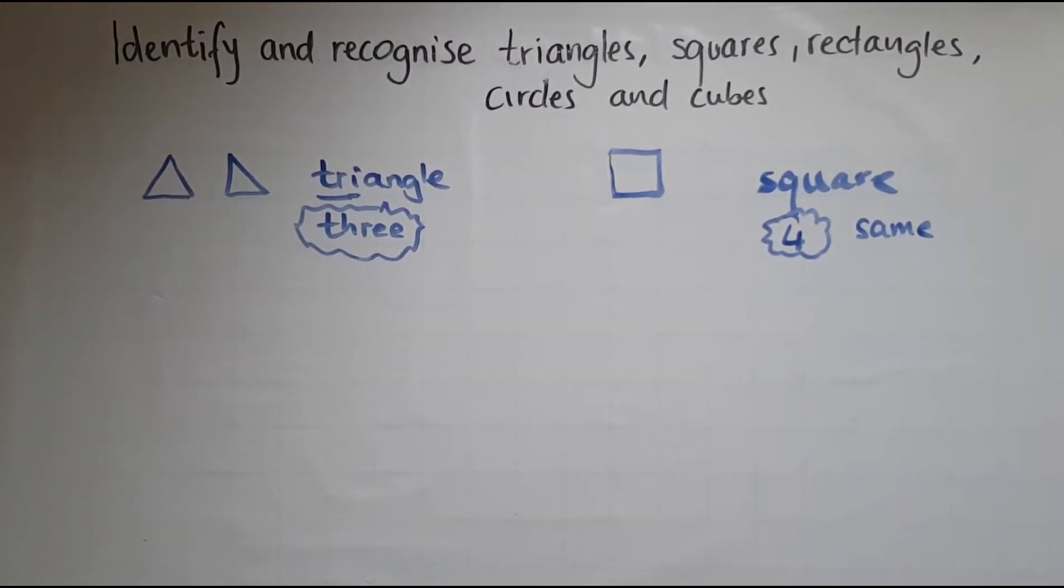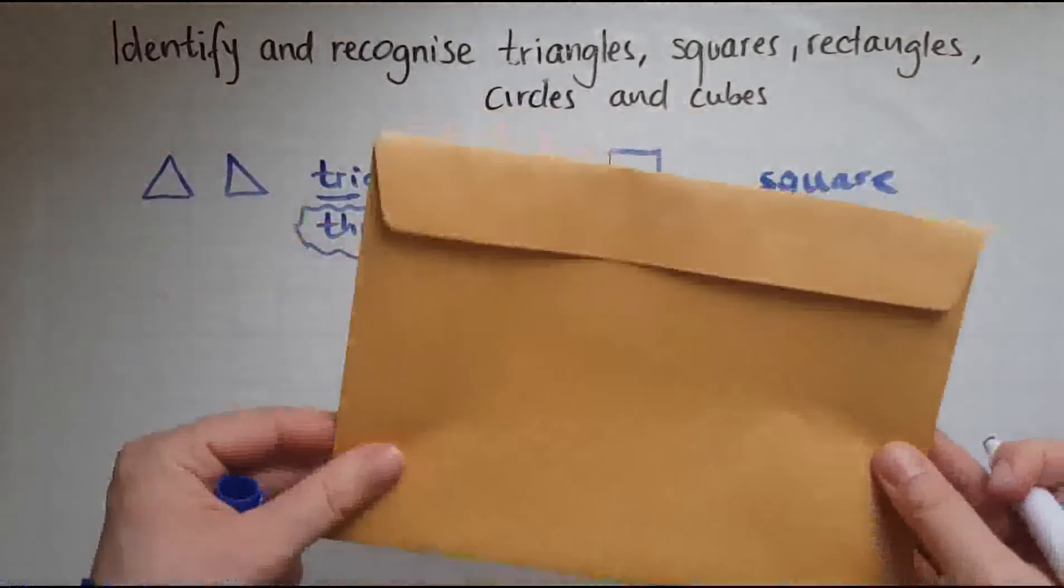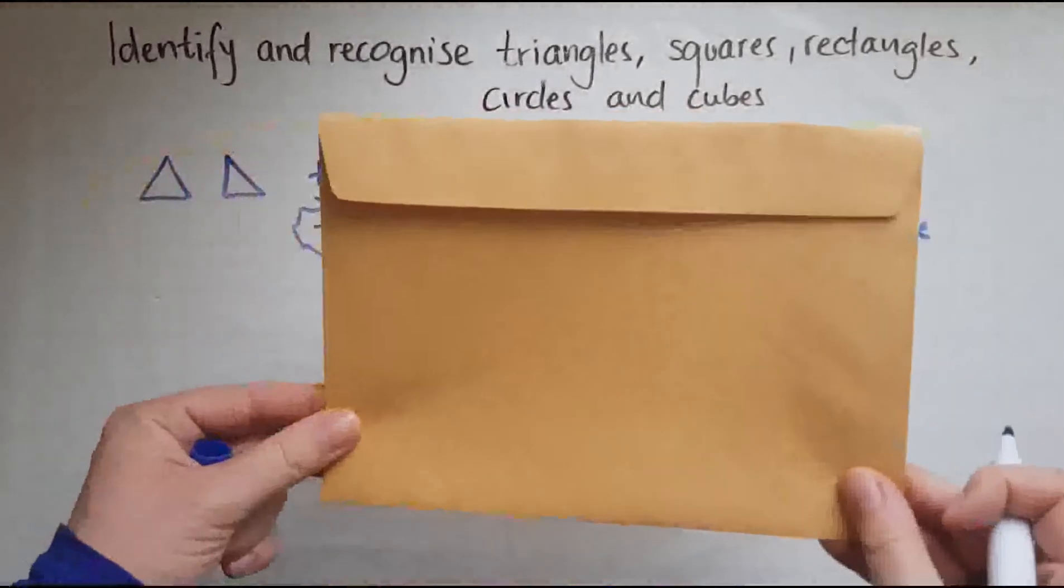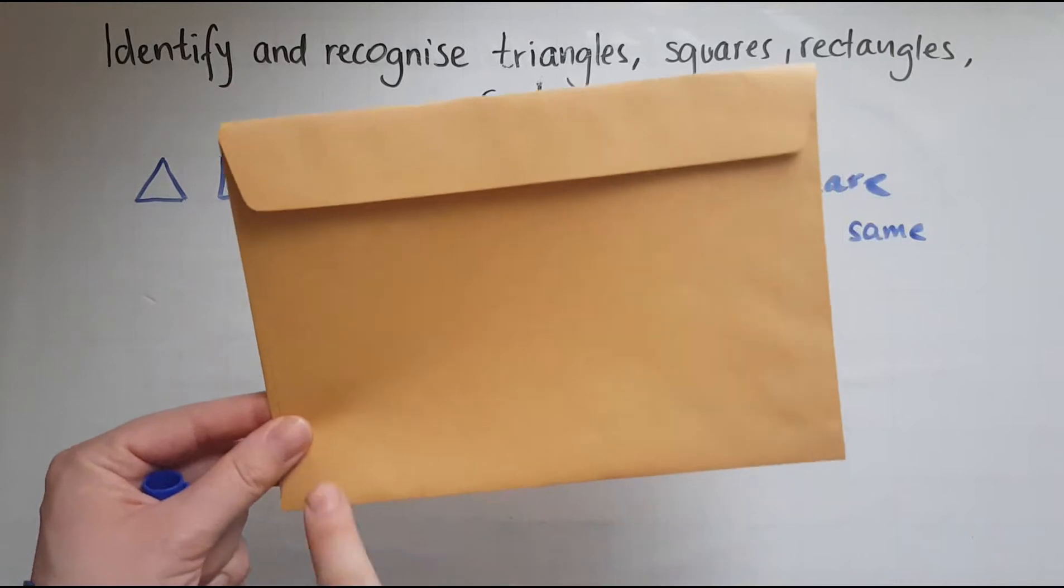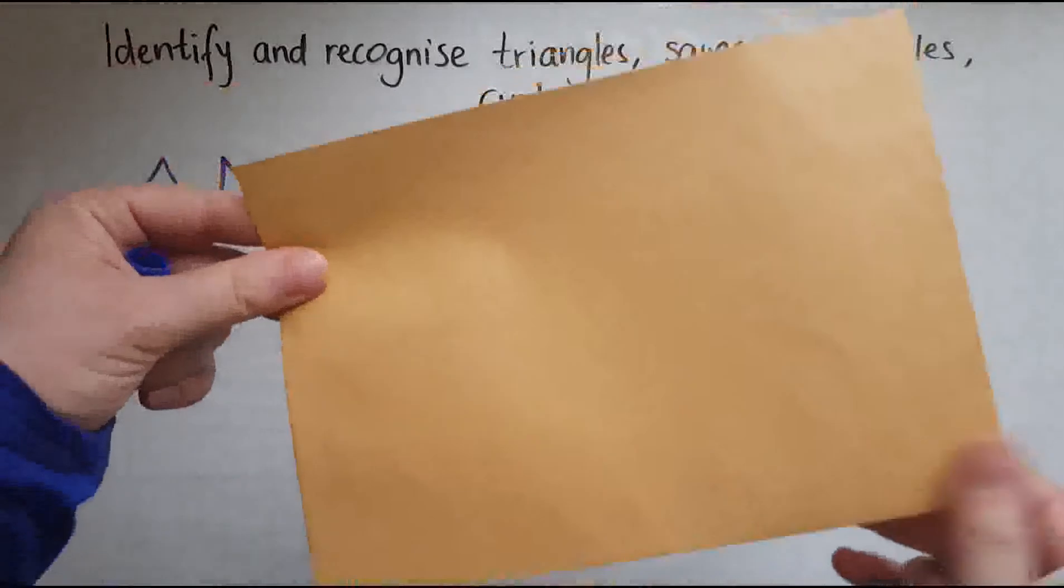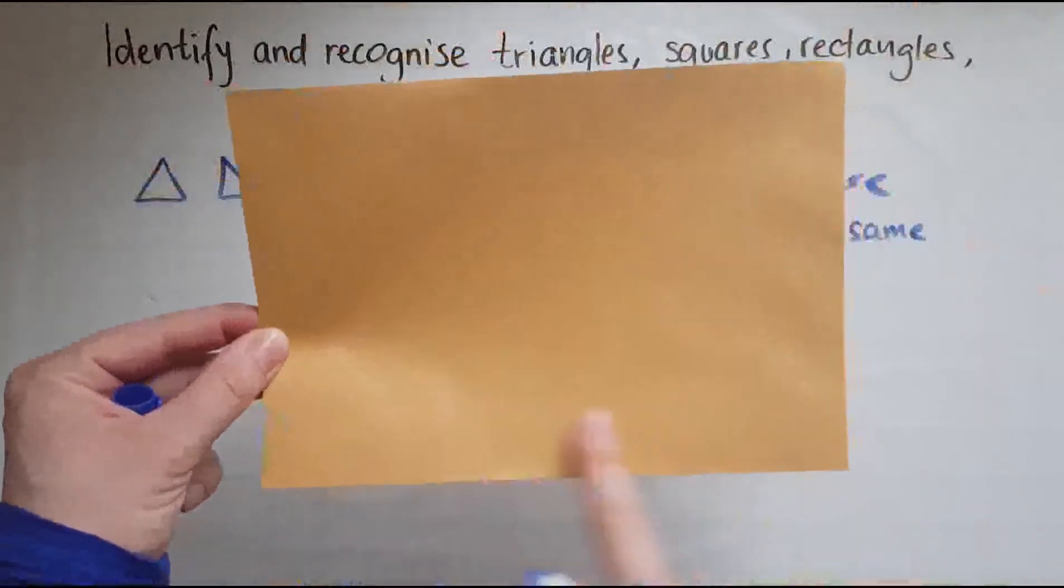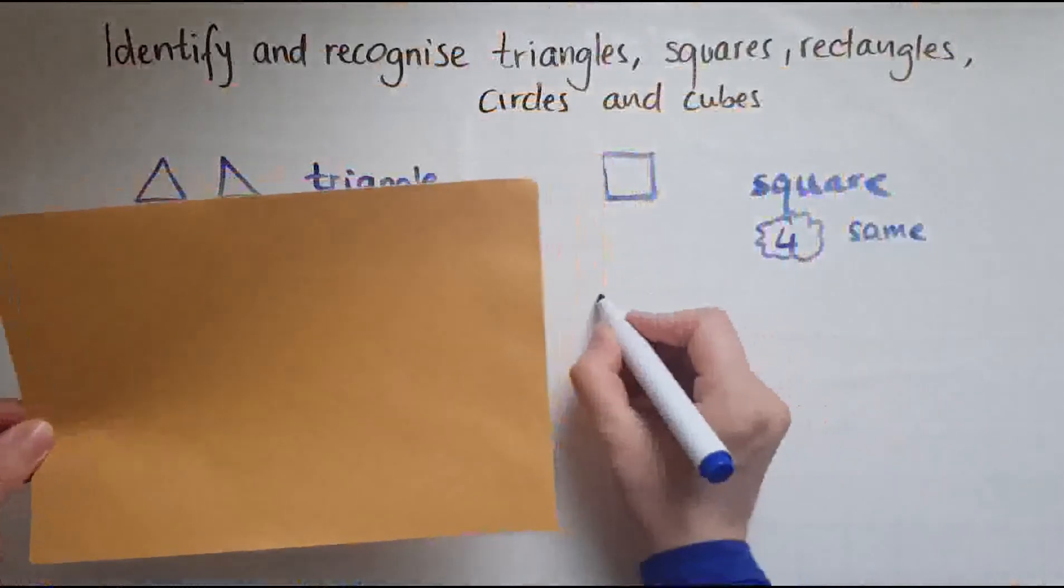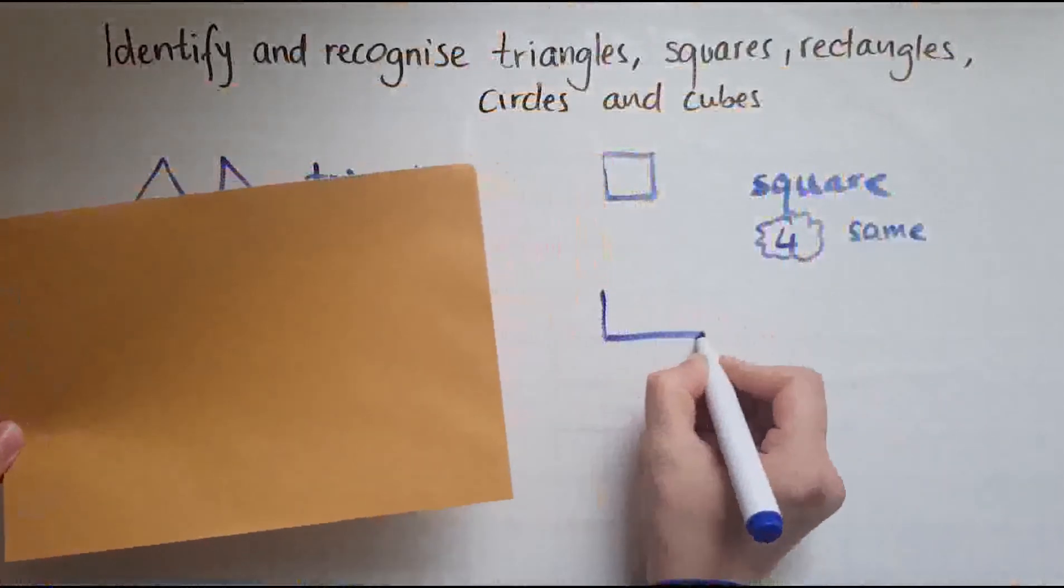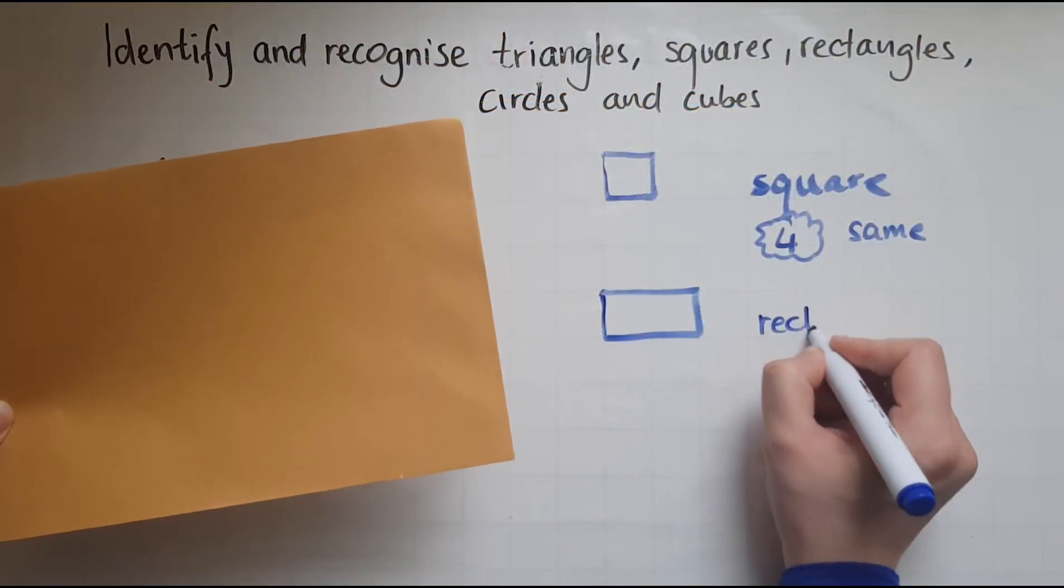Something similar to a square is a rectangle. A rectangle has some longer sides. They're not all the same, so two of the sides are longer. So the way it looks is something like this, and that is a rectangle.